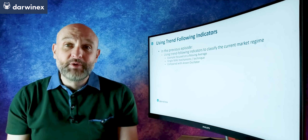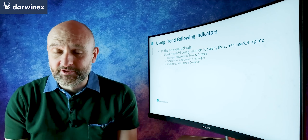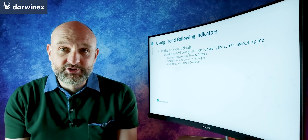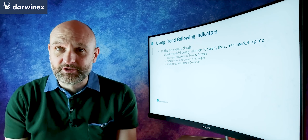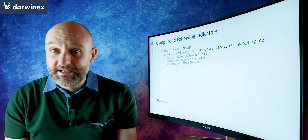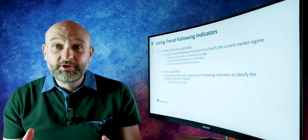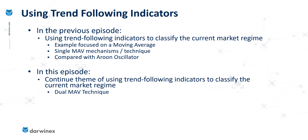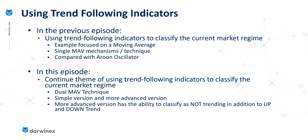We move on to a different technique using moving averages that does allow us to perform that middle categorisation — a categorisation that determines the market isn't trending in either direction. To do that, we'll use the dual moving average technique. I'm going to show two ways of using this: the first is a simplistic version, which just categorises into uptrend or downtrend categories, and then a slightly more advanced interpretation that allows us to get the third category.